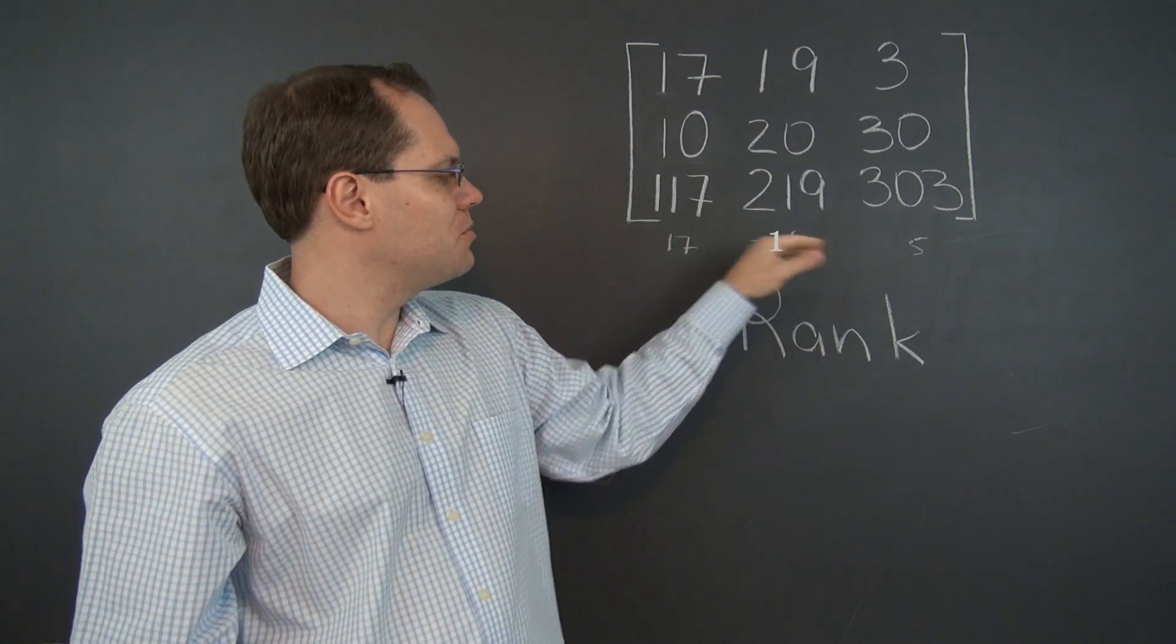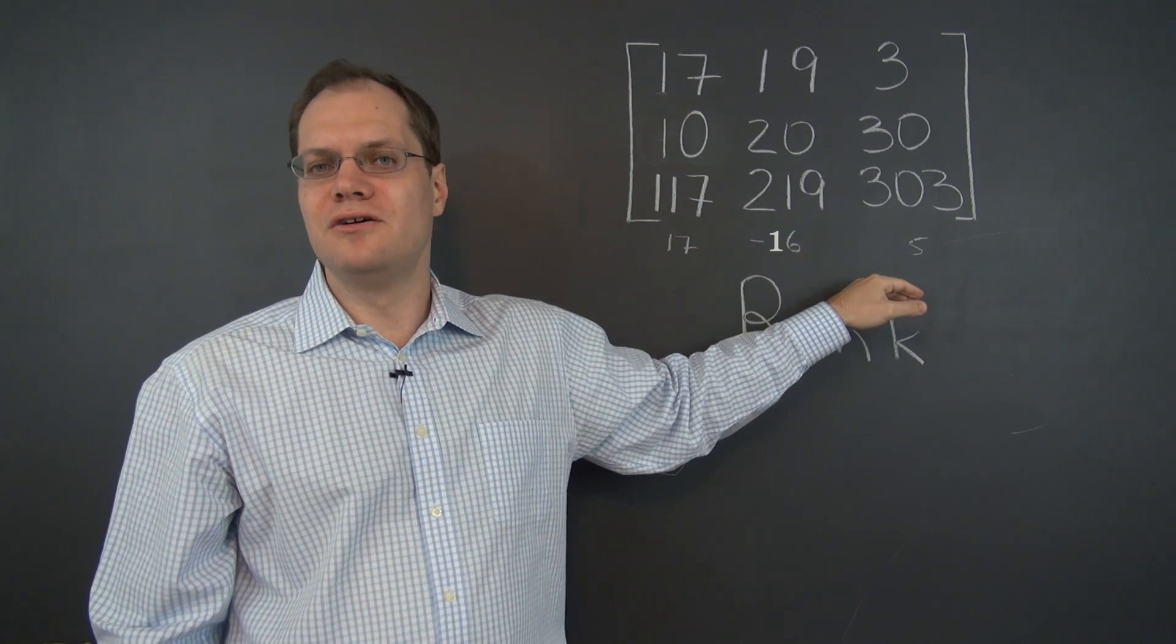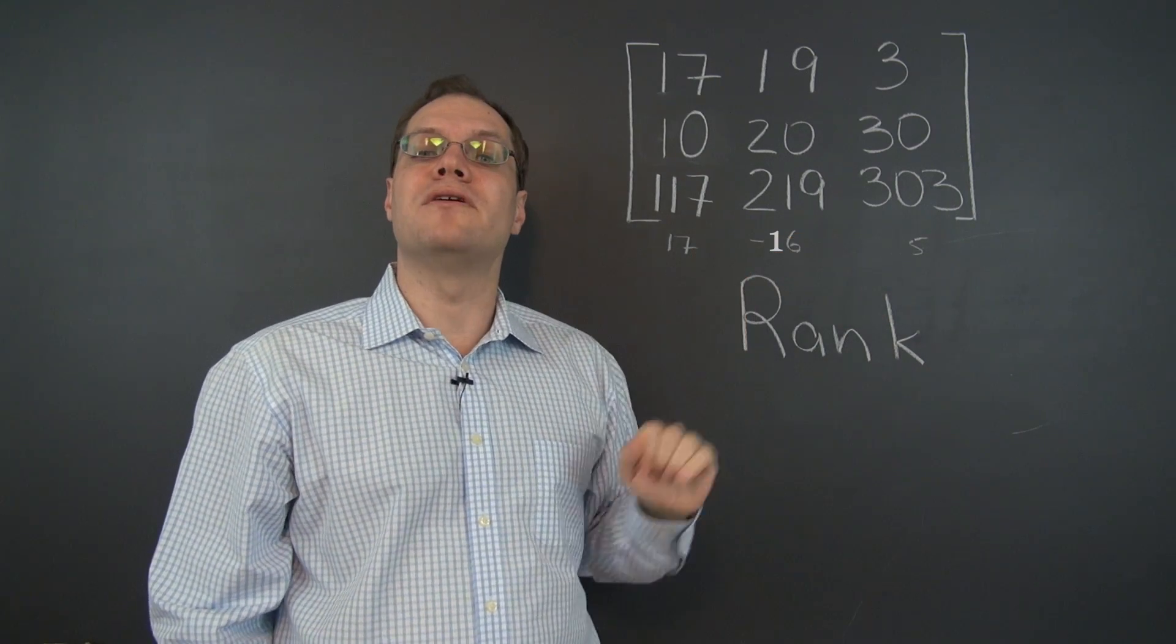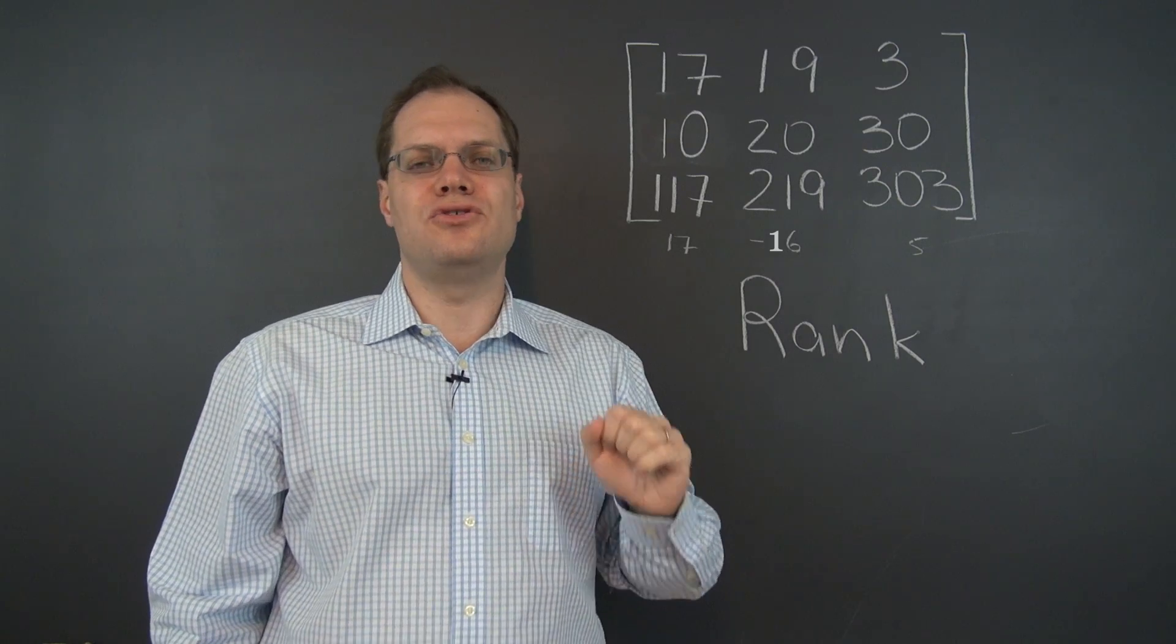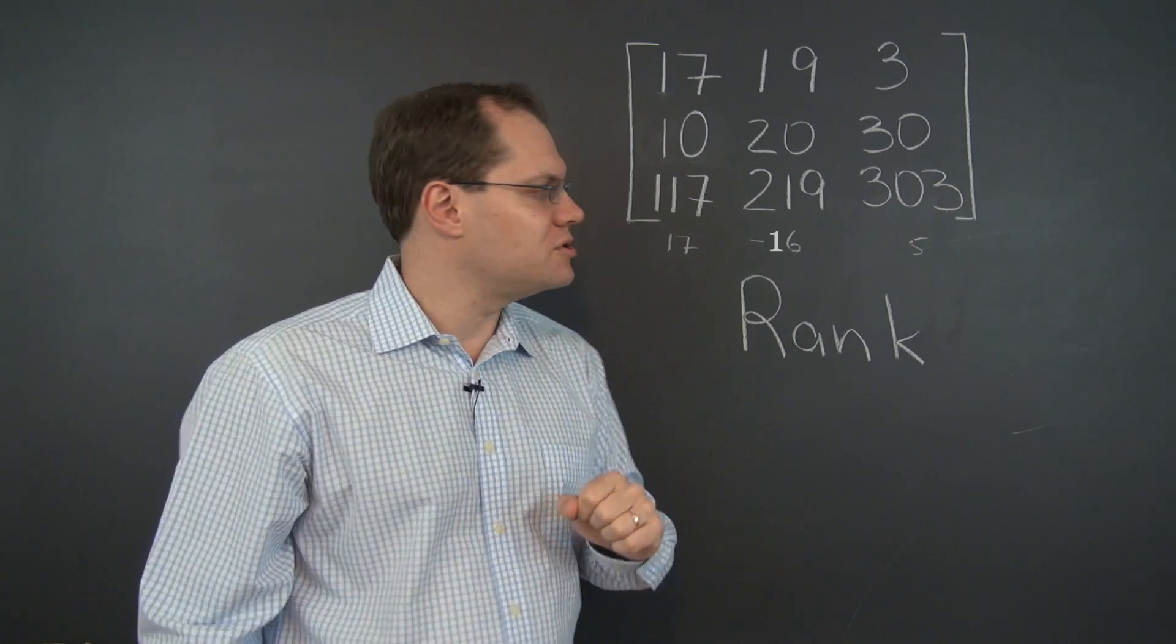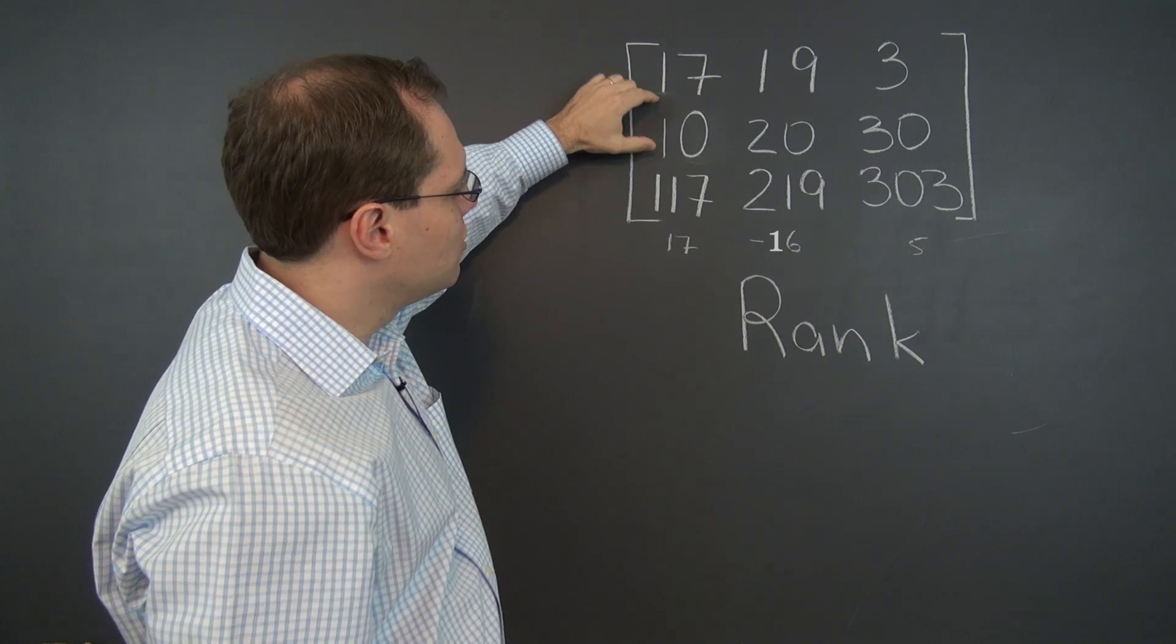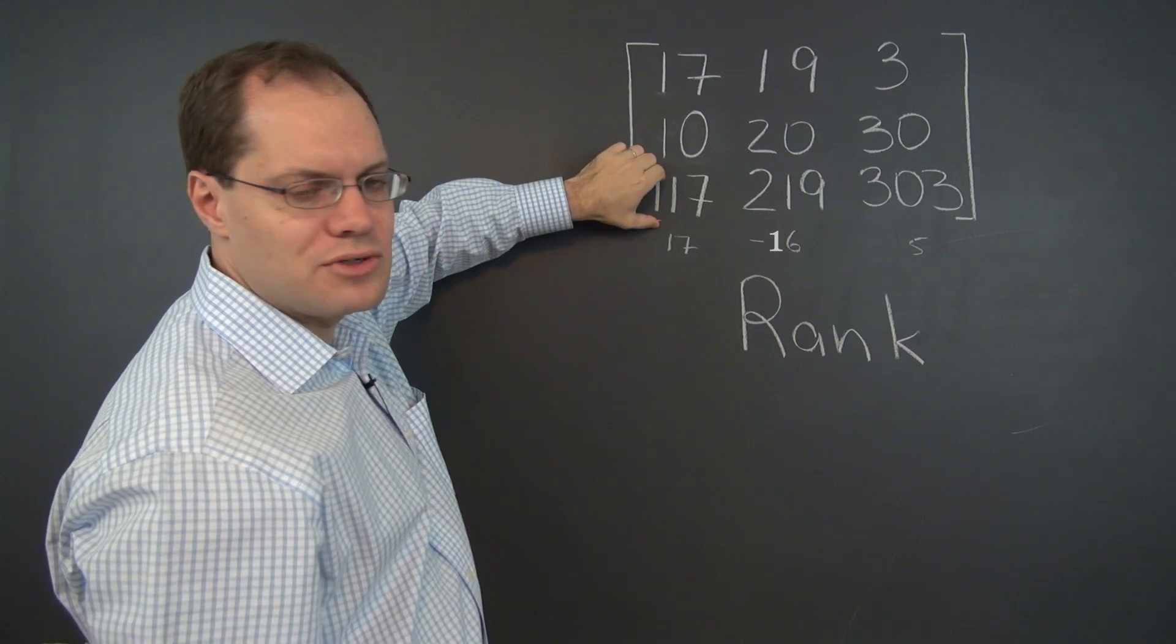But most human beings would not be able to notice this relationship among the columns. However, it's relatively easy to notice a relationship among the rows.